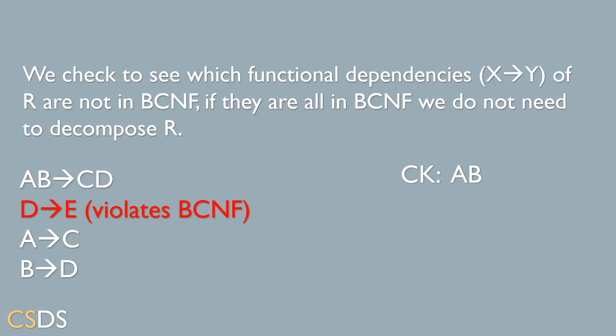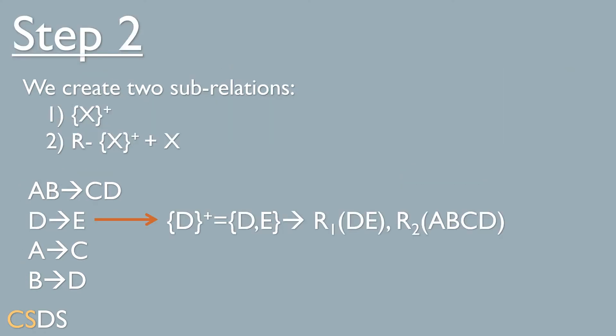Moving on to our second functional dependency, D goes to E. We can see that D is not the candidate key of our relation, so this functional dependency violates BCNF. Now that we've found a violating functional dependency, we move on to the next step.